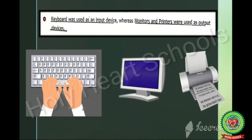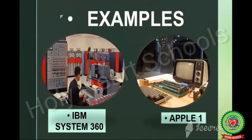Keyboard was used as an input device, whereas monitors and printers were used as output devices. IBM System 360 and Apple One are some examples of third generation computers.